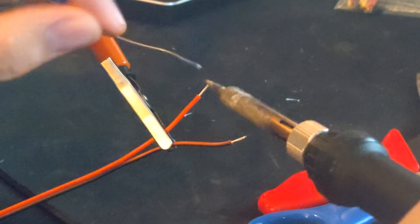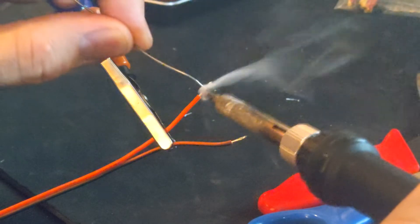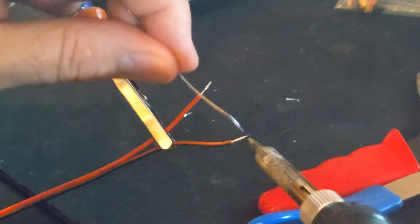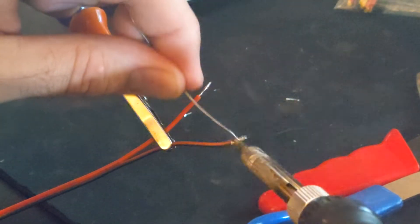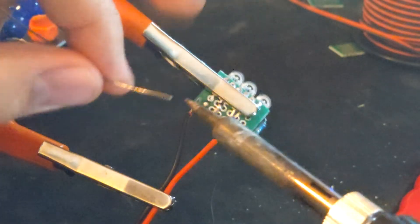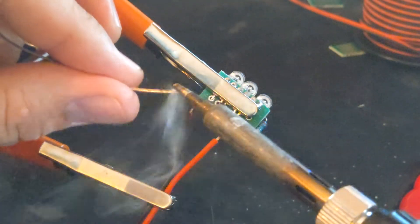Now we can attach each wire into the IR LED sensor we created. To make it easier put some solder on each wire first. Then solder each wire to the board.